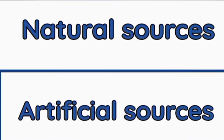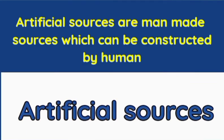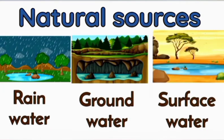Now we'll know about the sources of water. There are two sources of water: natural sources and artificial sources. Natural sources of water are those which can be found on earth naturally and cannot be constructed by humans, while artificial sources are man-made sources which can be constructed by humans. Natural sources of water are rainwater, groundwater, and surface water.